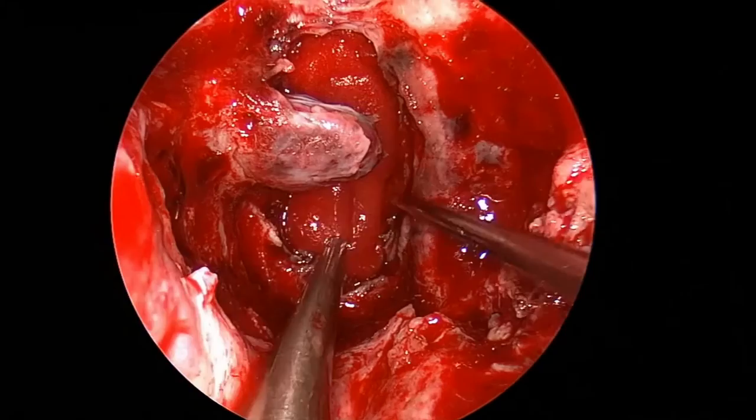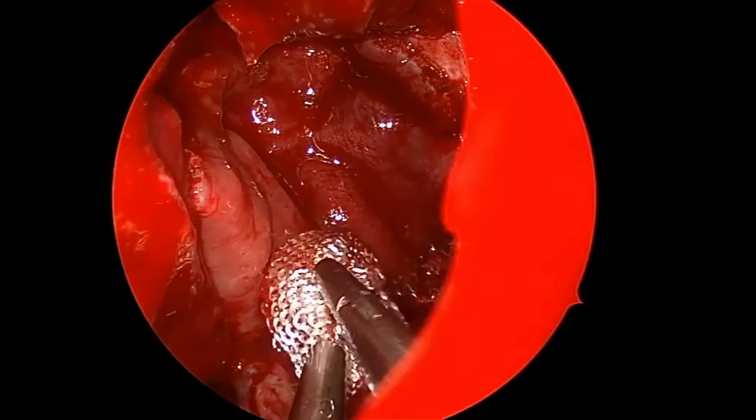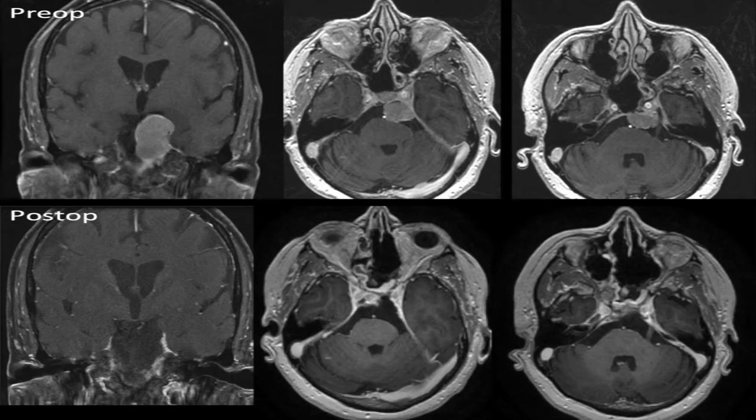Reconstruction with Duragen inlay. Now a fascia lata graft onlay. And now a vascularized nasoseptal flap being restored with Surgicel. And here is the post-op imaging showing complete resection of the tumor.